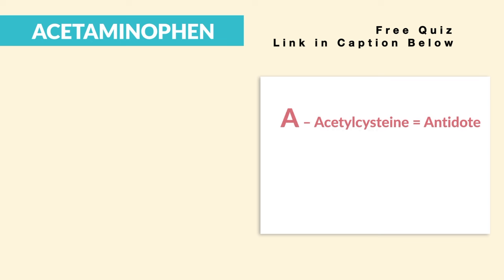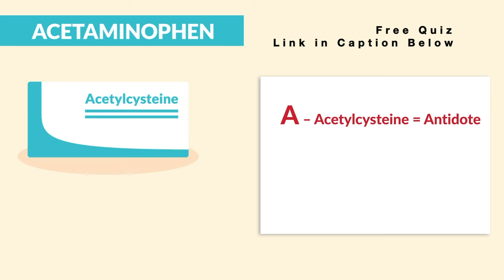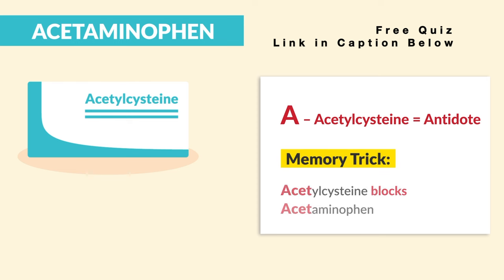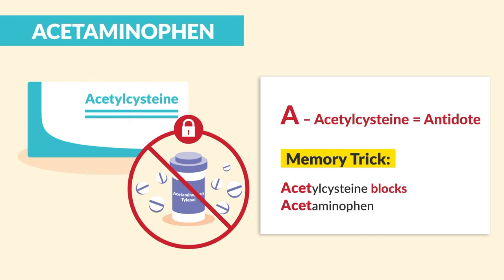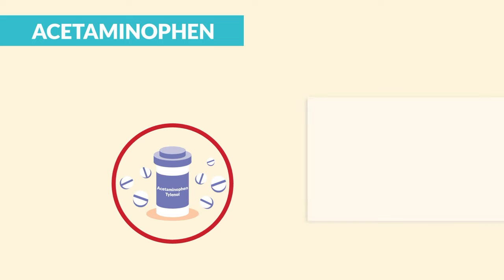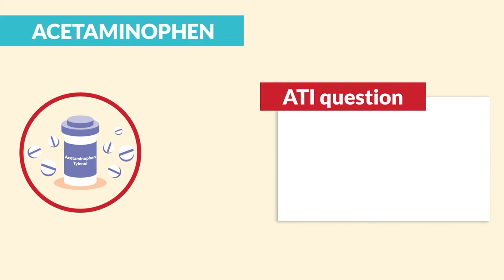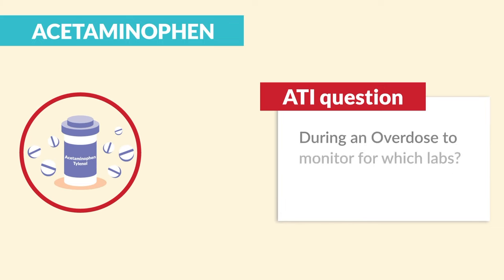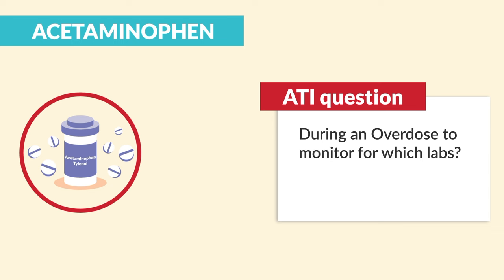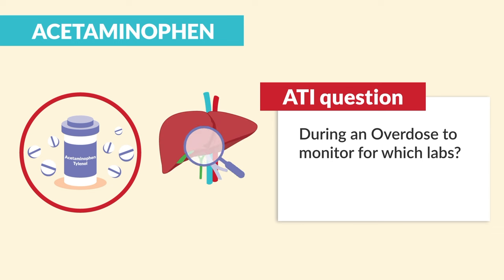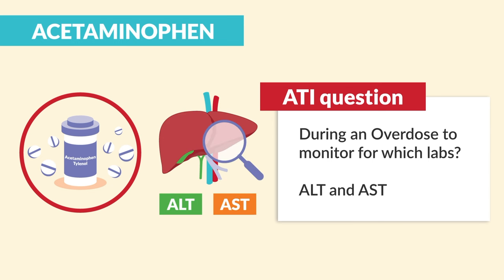Now the last A is for acetylcysteine, which is the antidote for acetaminophen. The memory trick is pretty simple: acetylcysteine blocks acetaminophen. Now ATI asked a very interesting question — during an overdose, which labs do you monitor for? Well guys, since it's hard on the liver, we monitor the liver labs, both ALT and AST. Big test tip right there.